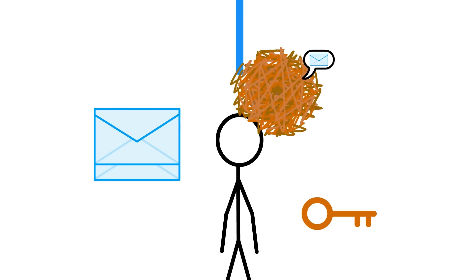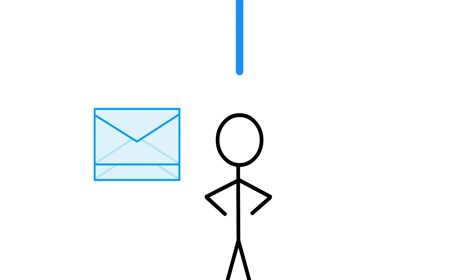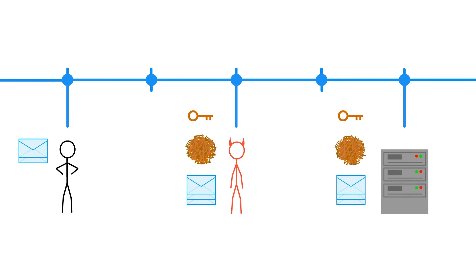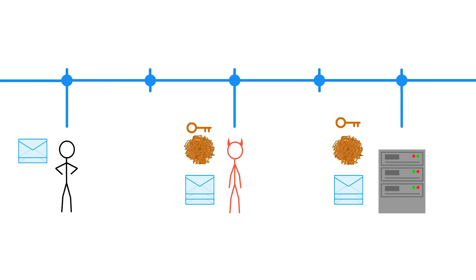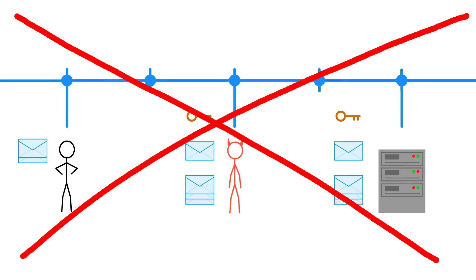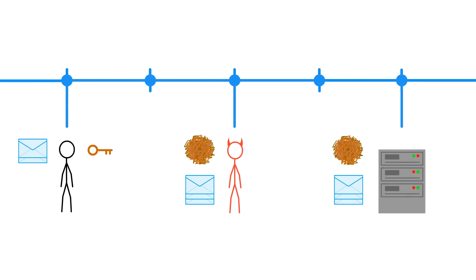This key is a secret, so we can't pass it through the internet for eavesdroppers to see — otherwise they would be able to unscramble our messages. But what about you and the server? Without access to each other's key, how are you supposed to unscramble each other's messages?